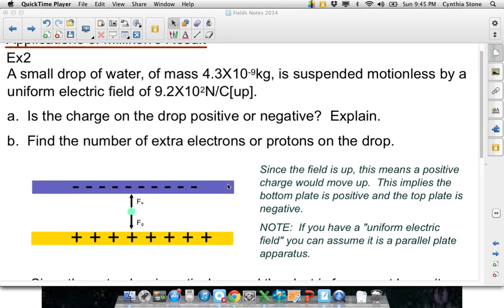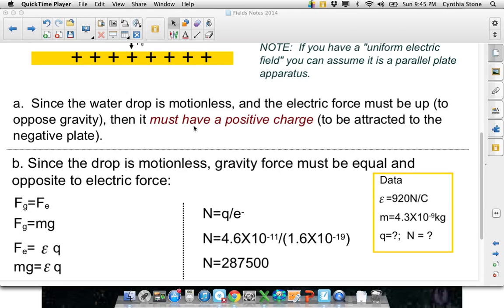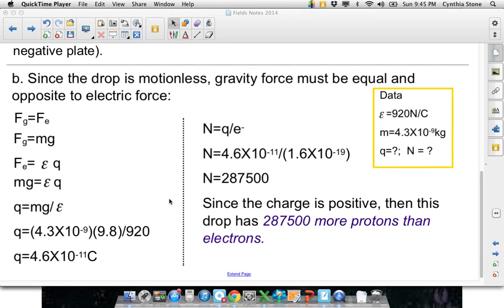And then it says, find the extra number. So, since the drop is motionless, gravity force must be equal and opposite to electric force. We know electric force is equal to field strength times charge. That would give us the newtons, right? Newtons per coulomb times coulombs. So, mg equals eq, solve for q. There's our charge.